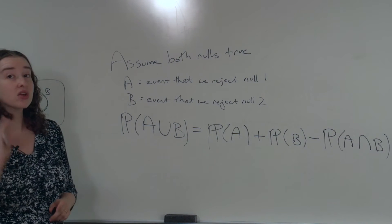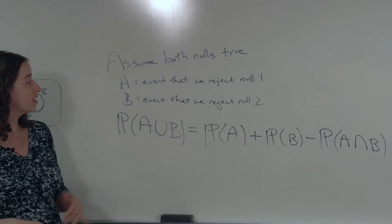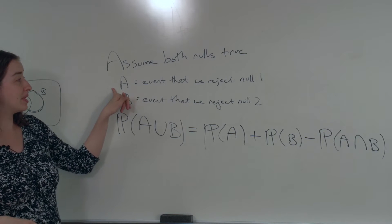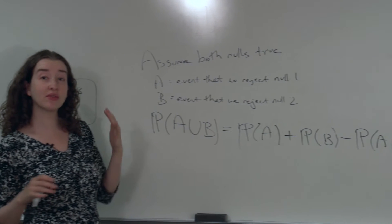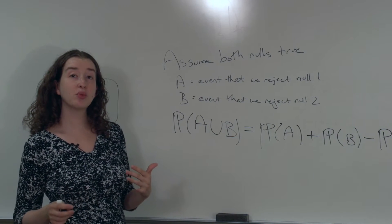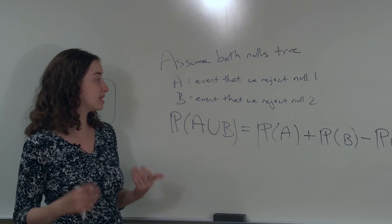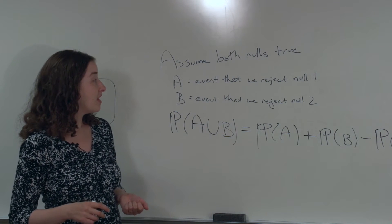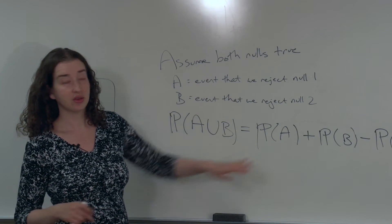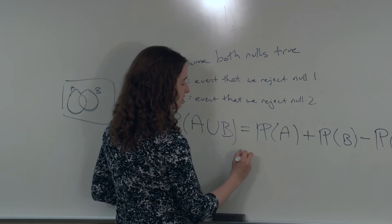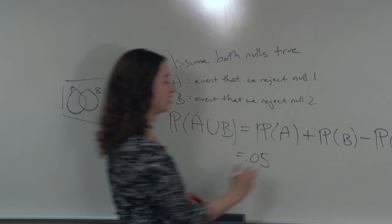So now let's think of the particular context that we have. If the null is true for test 1, what's the probability that we reject that null? That probability is equal to whatever cutoff we decided to use for our test. If we're going to use 0.05 as the cutoff for rejecting a null based on its p-value, then the probability that when this null is true we reject it is 0.05. The probability of A is equal to, for example, 0.05, if that's the cutoff we're using for p-values in this particular test.